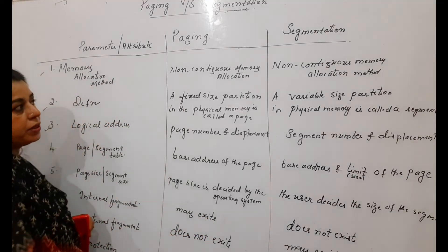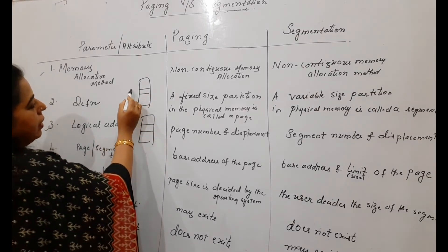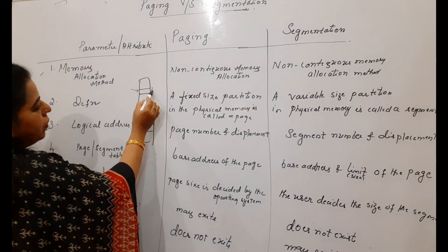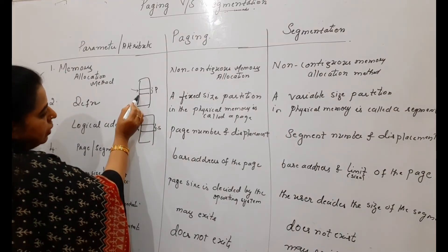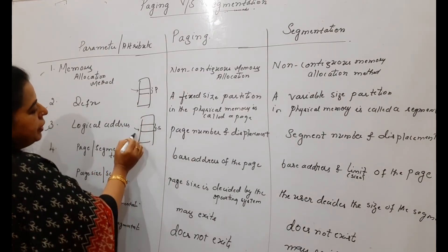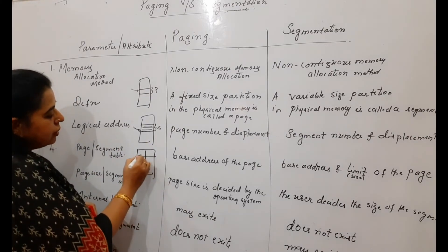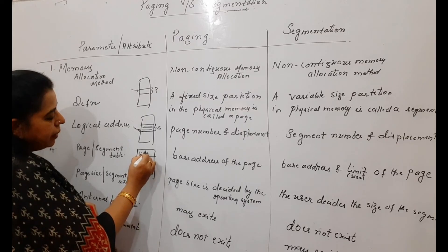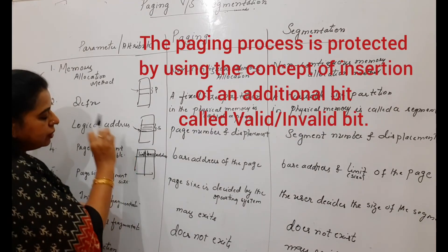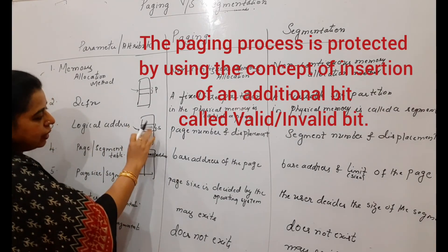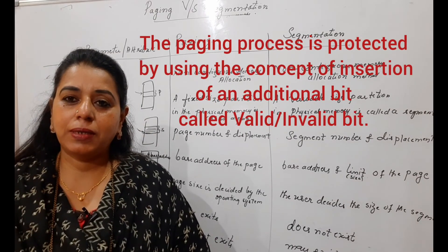When it comes to protection, access should be only to all locations of the page or all locations of the segment — it should not cross the boundary. In the segment table, you can see the limit value, which is the size of the segment, apart from the base address. This limit ensures access does not cross the boundary of that particular segment. This covers all the differences between paging and segmentation.